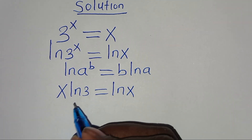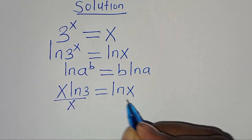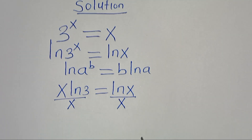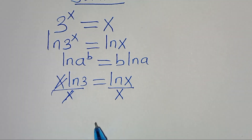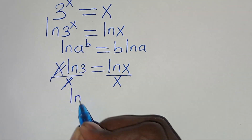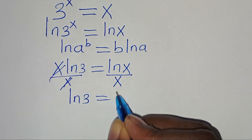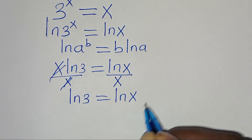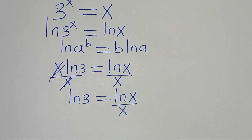The next step is to divide both sides by x. We also have ln(x) on the right, so now we have ln(3) equal to ln(x) over x.